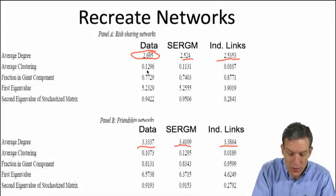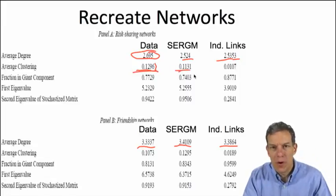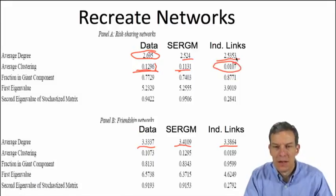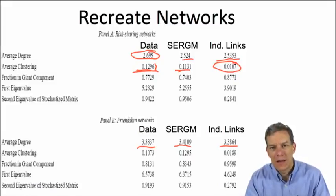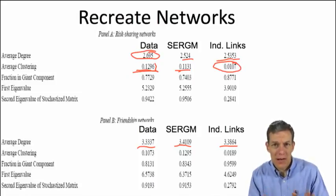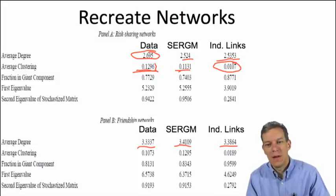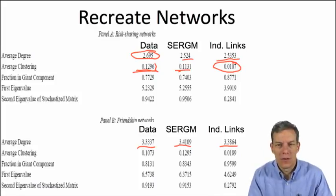When we look at clustering, the actual data show about 0.13. The ERGM comes up with about 0.11, which is close. The independent links model, if we just fit links independently, gives 0.01. That's not surprising — it's not accounting for triangles, so we end up with far too few completed triads and not seeing the transitivity present in the data.